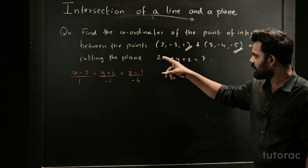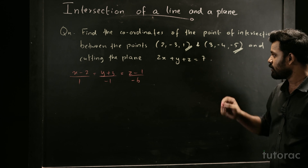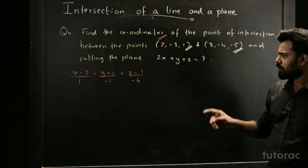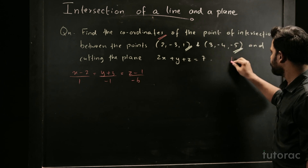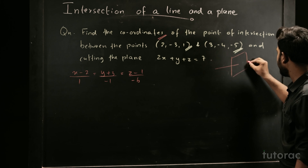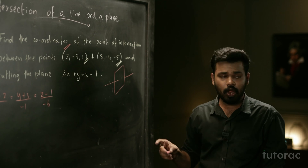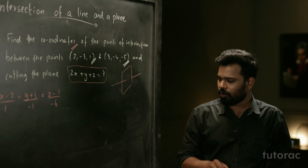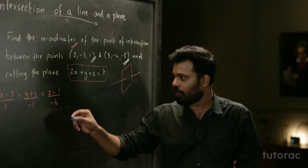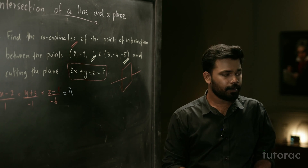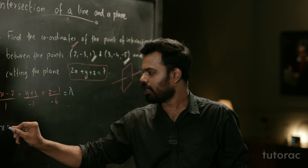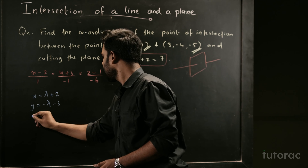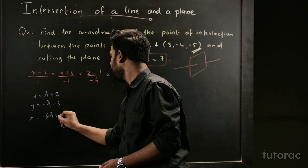This line is cutting the plane 2X plus Y plus Z equals 7. The general point on the line should also lie on the plane. So I am going to find the general point on the line by putting it equal to Lambda. By putting it equal to Lambda: X equals Lambda plus 2, Y equals minus Lambda minus 3, and Z equals minus 6 Lambda plus 1.